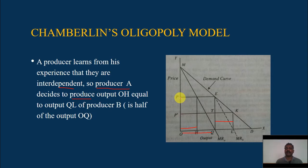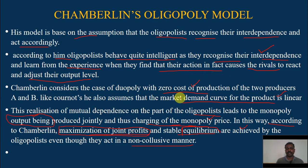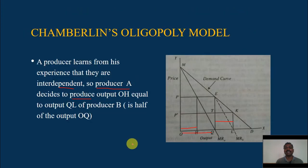This is how they realize their interdependence — they fix the maximum price and produce half of the market output quite intelligently, though they do not have any formal collusion but still act very intelligently.